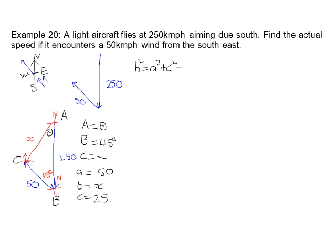Now put the information in. We've got b squared equals 50 squared plus 250 squared minus 2 times 50 times 250 times the cos of 45.